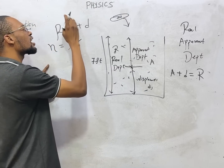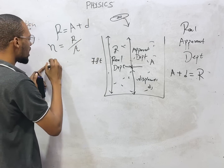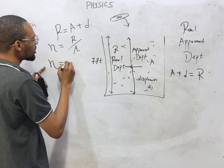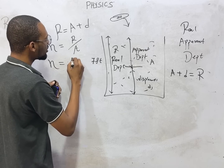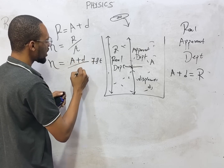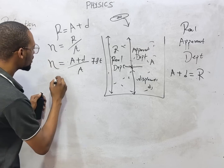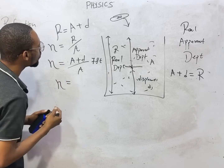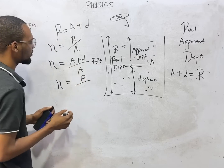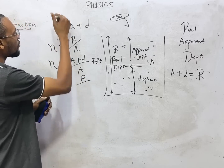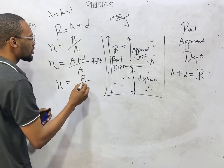Recall that the refractive index equals real depth over apparent depth. And since real depth equals apparent depth plus displacement, the refractive index can also be expressed as: apparent depth plus displacement over apparent depth. Alternatively, apparent depth equals real depth minus displacement, so refractive index equals real depth over apparent depth.